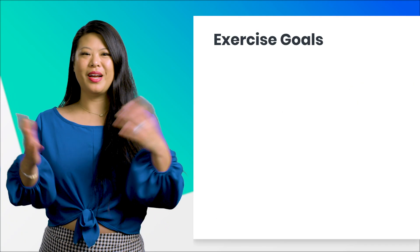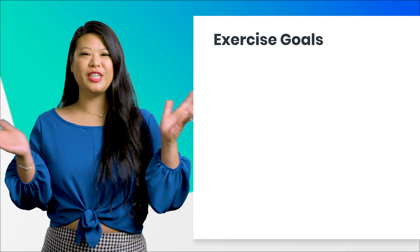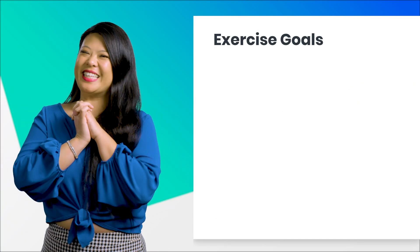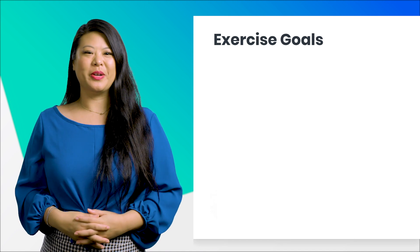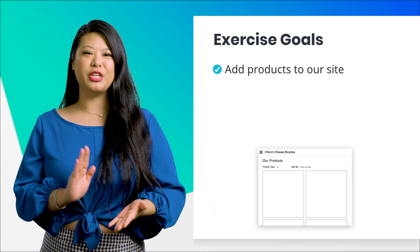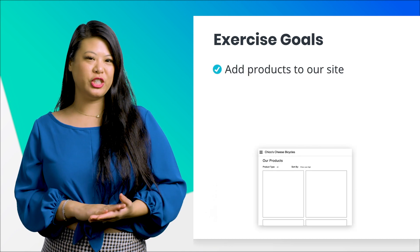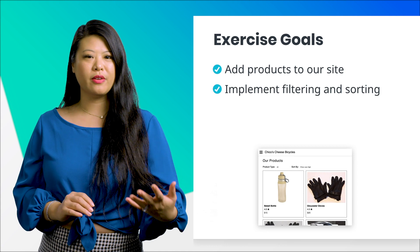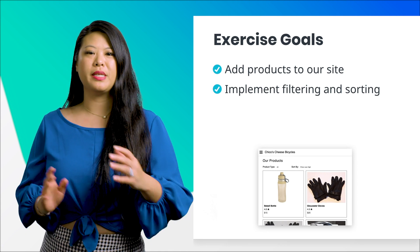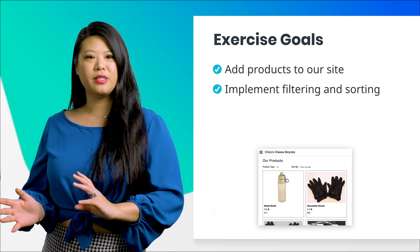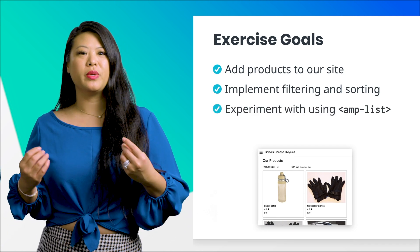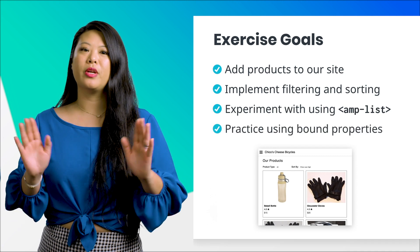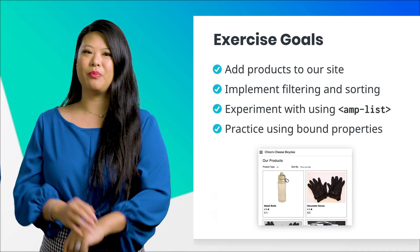Now it's time to add the products page to our Chico's Cheesebikes example. In this exercise, we're going to be adding a new product page to our Cheesebikes site, implement filtering and sorting of our product list based on selected options, and we'll also be experimenting with the amp-list component. And we're going to practice using bound properties.